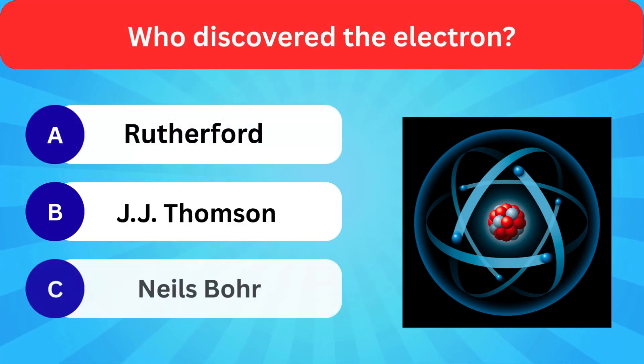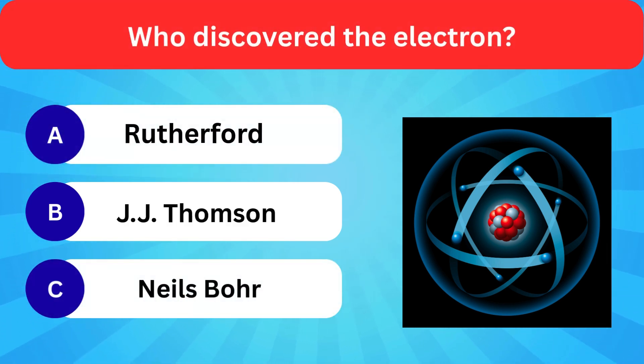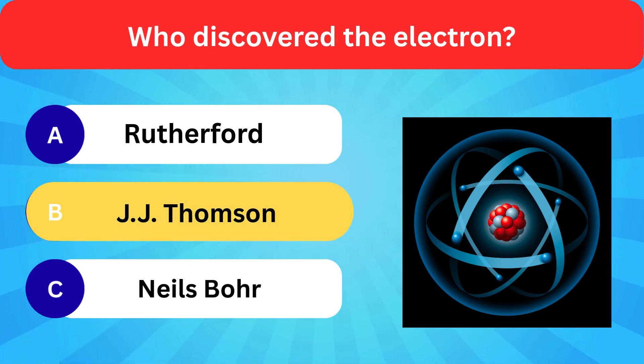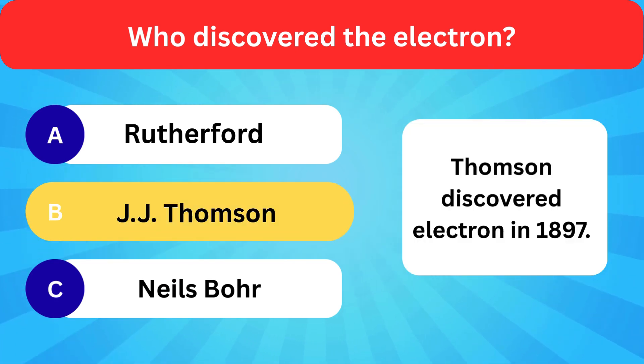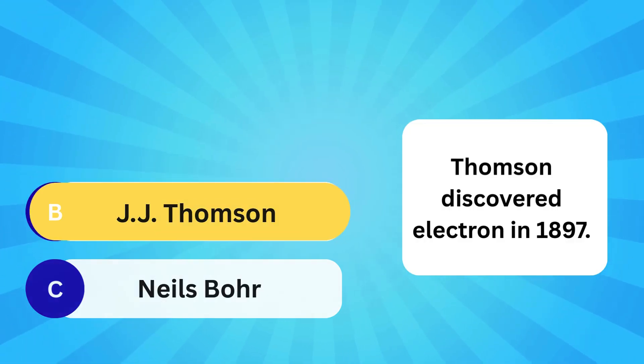Who discovered the electron? Options: Rutherford, J.J. Thompson, Niels Bohr. Correct answer is J.J. Thompson. Thompson discovered the electron in 1897.